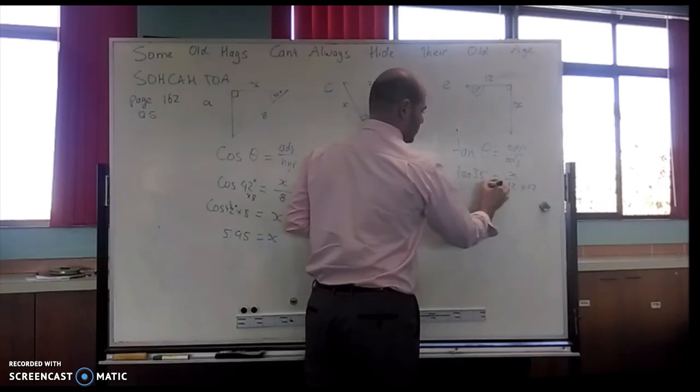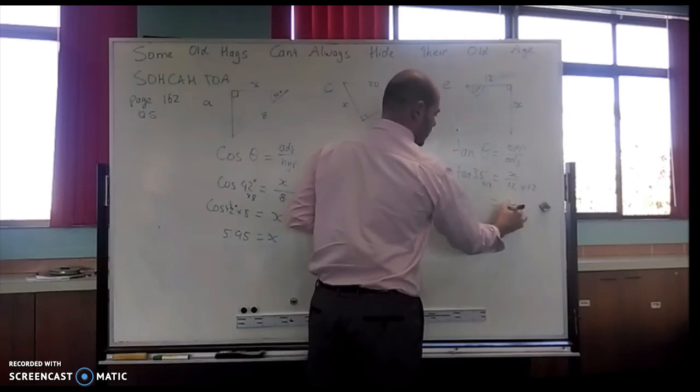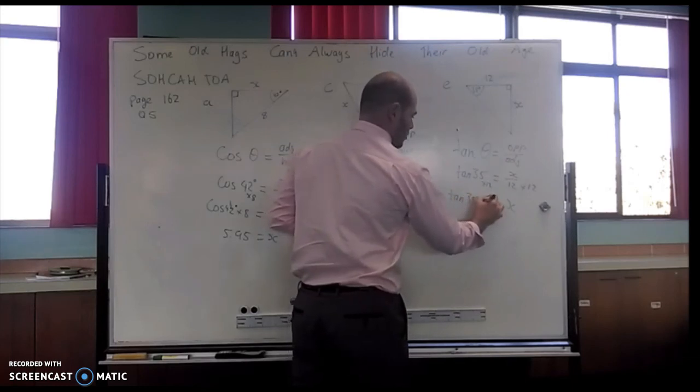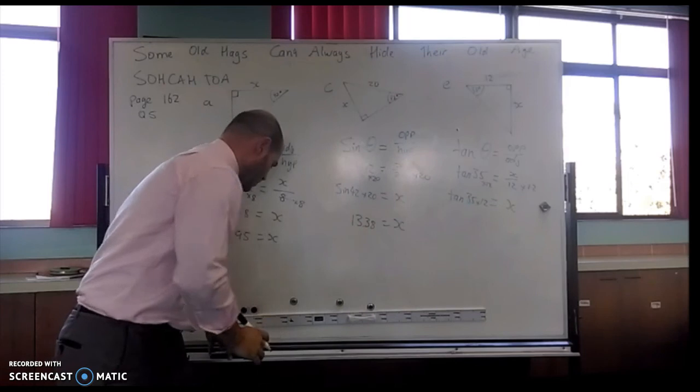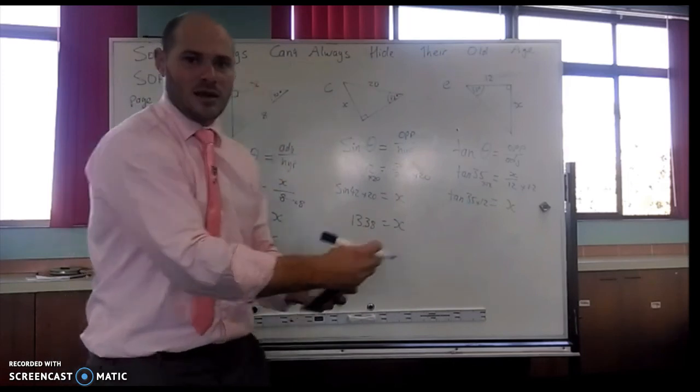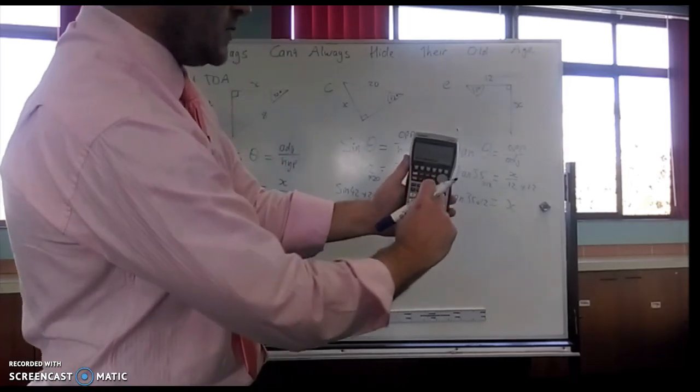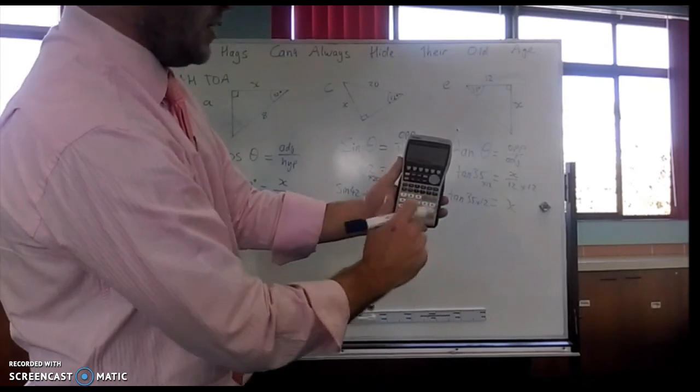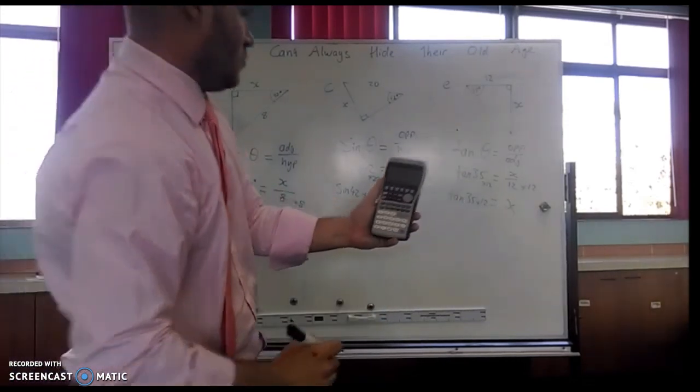Multiply both sides by 12 to get my x on its own. Tan of 35 times 12. And again with my calculator, just as before, tan of 35 times 12 equals, and I'll go with 8.4 for this one.